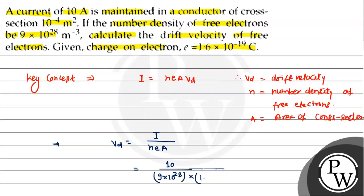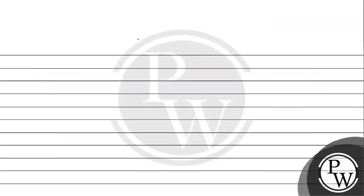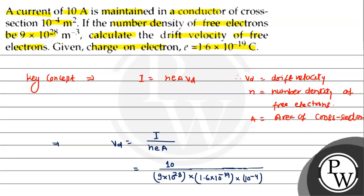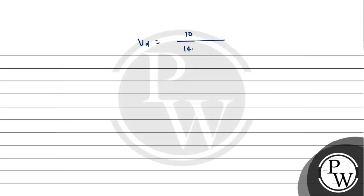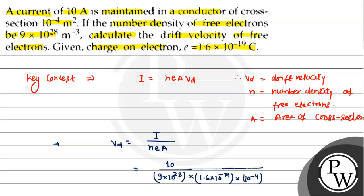Electron का charge है 1.6 into 10 to the power minus 19, और cross section area है 10 to the power minus 4। इसको simplify करते हैं। नीचे 9 into 1.6 multiply करने पर 14.4 आएगा। Power में minus 19 और minus 4 को जोड़ने पर minus 23 हो जाएगा, और ऊपर 10 to the power 28 है तो 28 minus 23 equals plus 5 बचेगा।